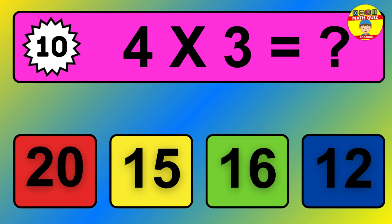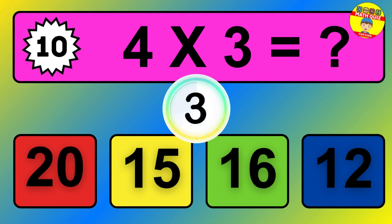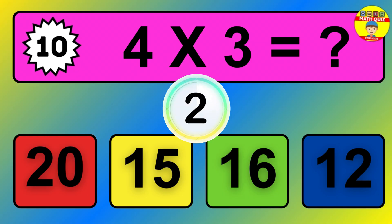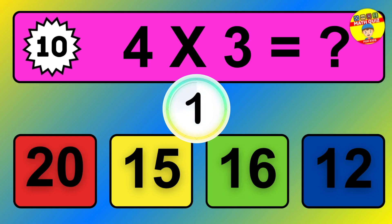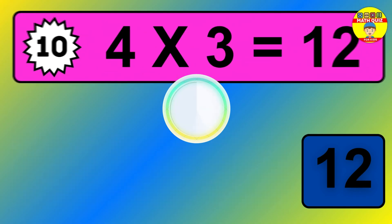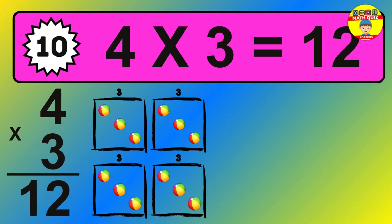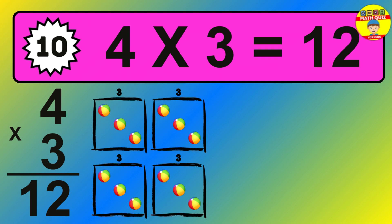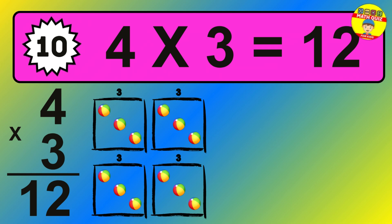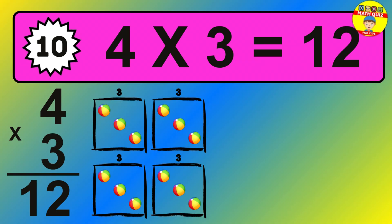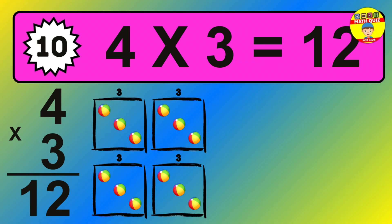Question 10. 4 times 3 equals what? The answer is 4 times 3 is 12. To calculate, we have 4 groups with 3 balls each one. So how many balls do we have? 12 balls.